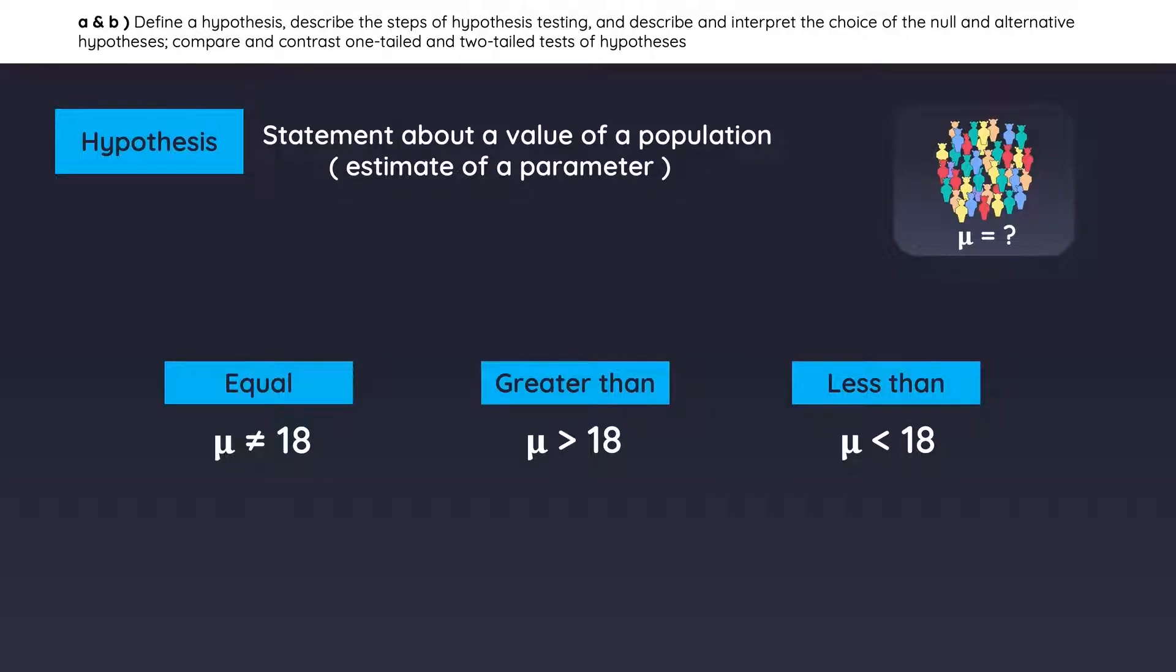The very first step in any hypothesis test is to state the hypothesis. H0 is the null hypothesis, and HA is the alternative hypothesis. A good trick to remember which is which is that whatever the analyst believes will become the alternative hypothesis.